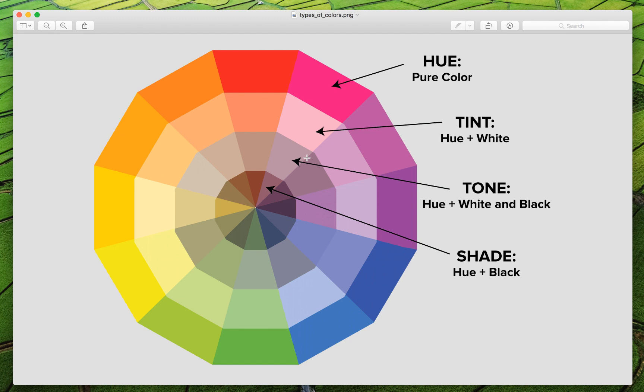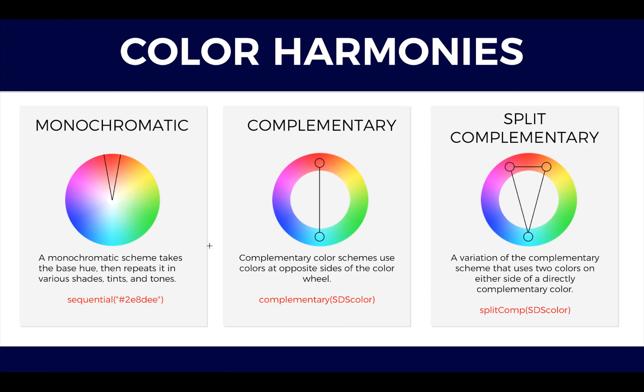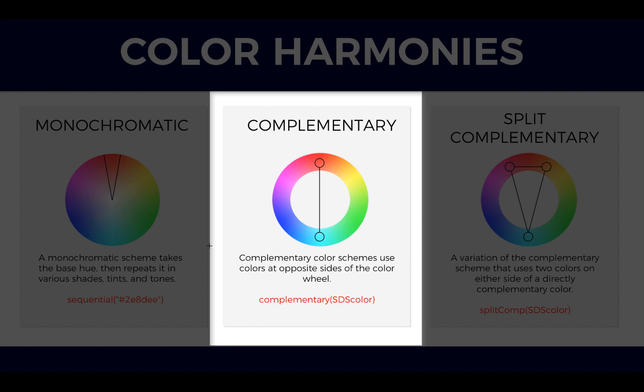Let's get back to our color schemes. The next one is complementary. Complementary color schemes use colors at opposite sides of the color wheel. The high contrast of complementary colors creates a vibrant look, especially when used at full saturation. This color scheme must be managed well so it is not jarring. Complementary color schemes are tricky to use in large doses, but work well when you want something to stand out. Complementary colors are really bad for text, just for your interest.